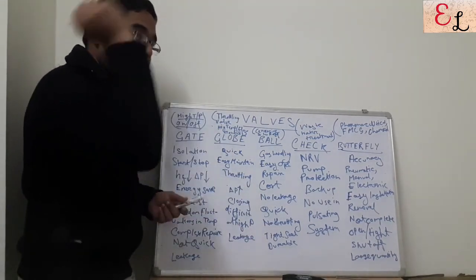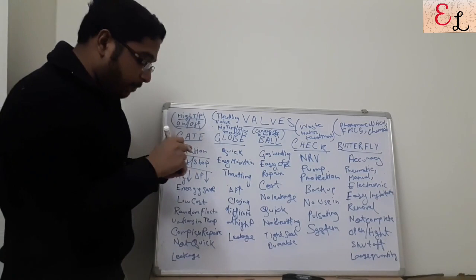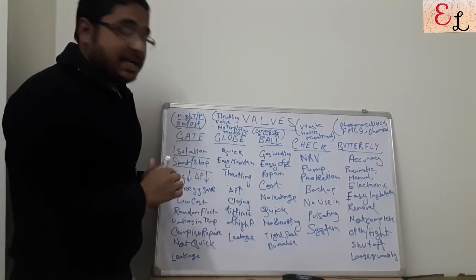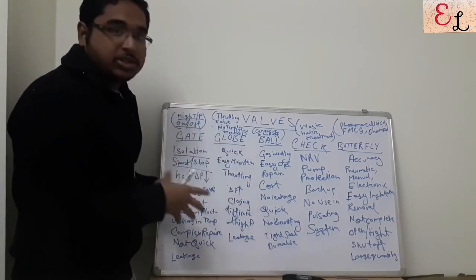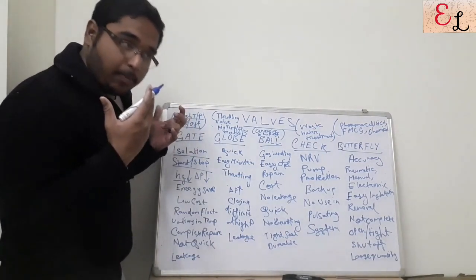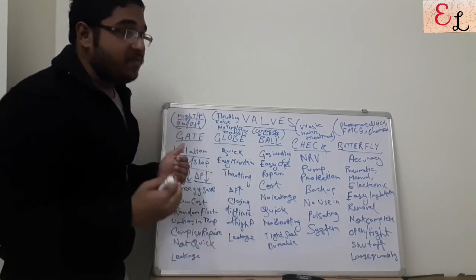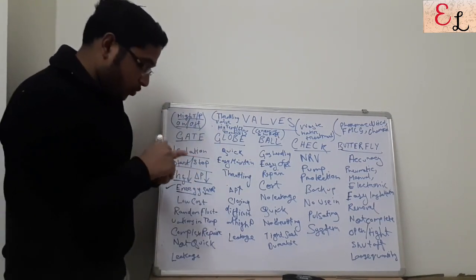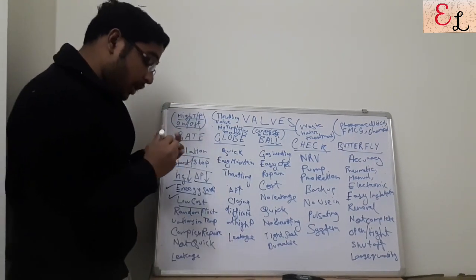Remember: when you need to close it completely or open it completely, you can use gate valves — it is for isolation, for starting or stopping the flow. Gate valve is preferred because when it is completely open, the frictional losses are very low. That is, Kc × V² / 2 — this is the form friction loss whenever a fluid passes through a valve. The Kc is very low for a gate valve, so the frictional loss and pressure drop are also low. There is therefore energy saving, and gate valves are very low cost.